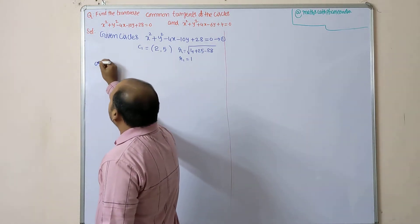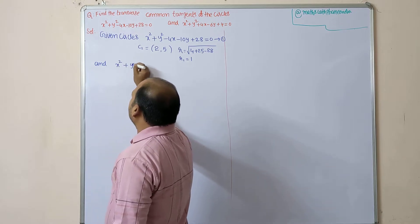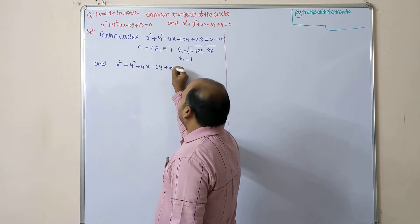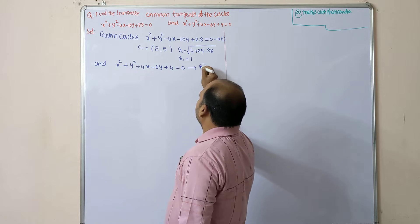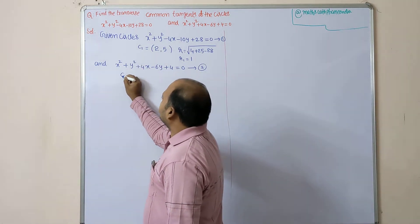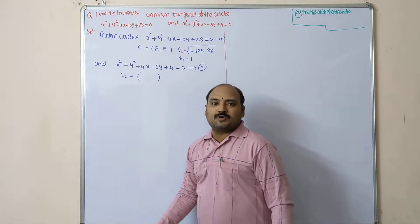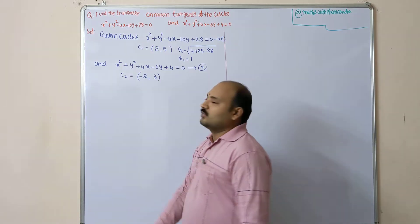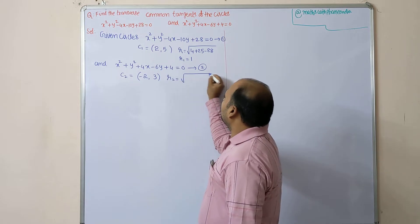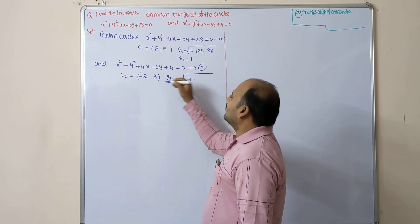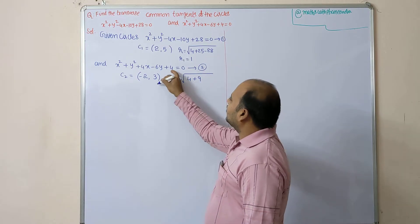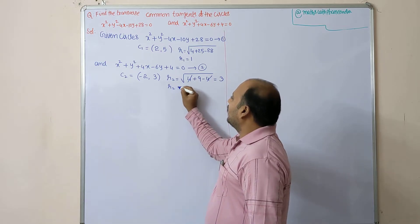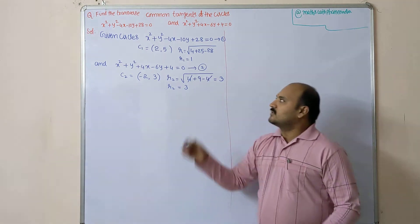The second circle equation is x² + y² + 4x - 6y + 4 = 0, equation number 2. Center c2 = (−4/2, −(−6)/2) = (−2, 3). Radius r2 = √((−2)² + 3² − 4) = √(4 + 9 − 4) = √9 = 3. So r2 = 3.